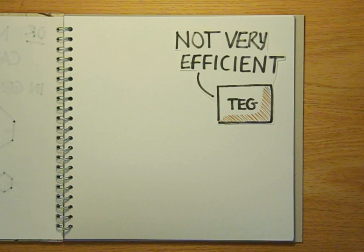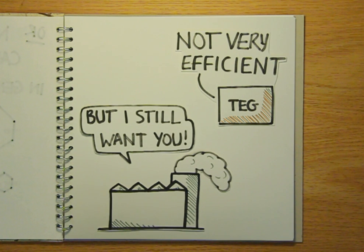Right now, TEGs produced using these technologies are only about 10% efficient at best, but in industries on the scale of a power station, even at this early stage, this could still contribute a huge fuel saving.